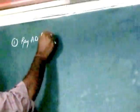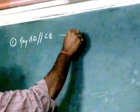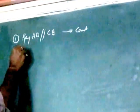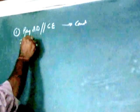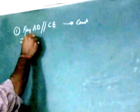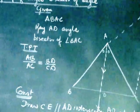First point: We have ray AD parallel to CE. This is our construction. If CB is a transversal, just see here.